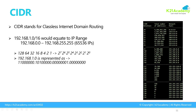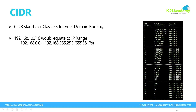Each octet can range from 0 to 255, because 2 to the power of 8 is 256. So the last two octets can go from 0.0 all the way to 255.255, which gives 65,536 IPs within that /16 CIDR. How do you calculate the number of IPs? There are a total of 32 bits. 32 minus 16 leaves 16 remaining bits, and 2 to the power of 16 is 65,536.